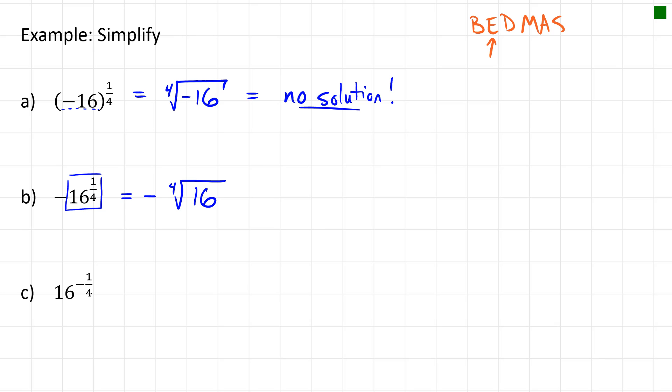And because that negative is now on the outside, it doesn't affect our simplification. We can take the fourth root of 16, that would be equal to 2, so that's negative 2.